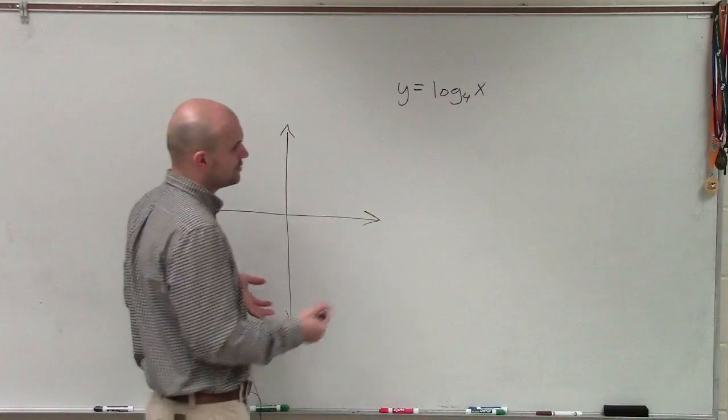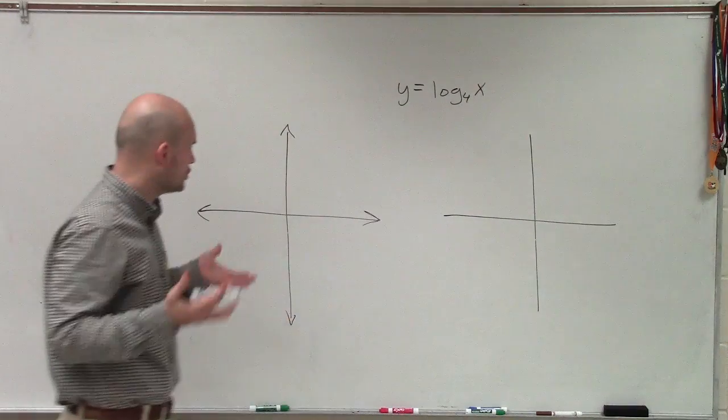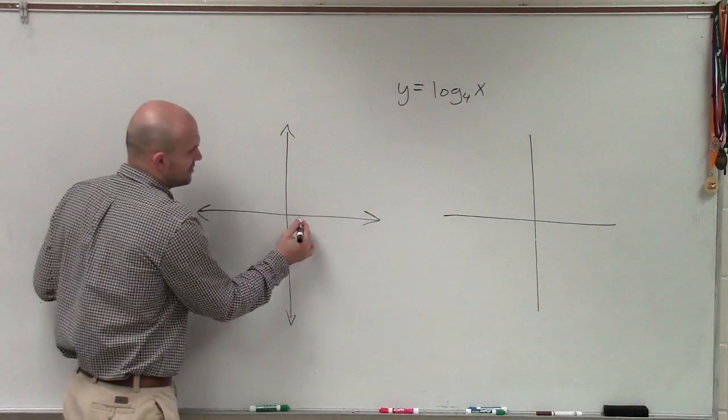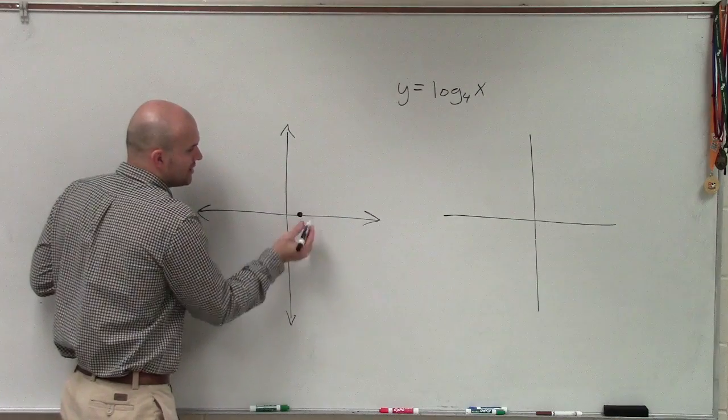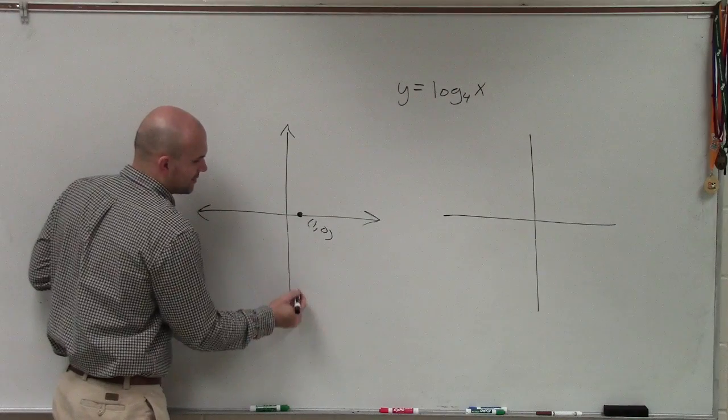A lot of times when dealing with transformations though, what I like to always do is go back and look at a parent graph. And without doing some exact values, we know that all logarithms, until it has transformations of its parent graph, is going to have an x-intercept at 1 comma 0.